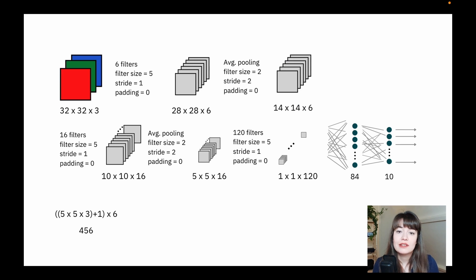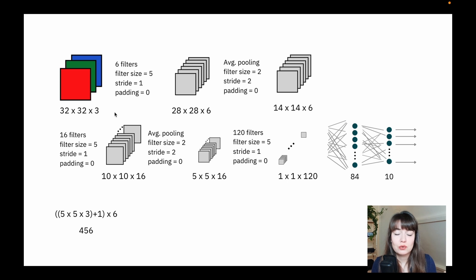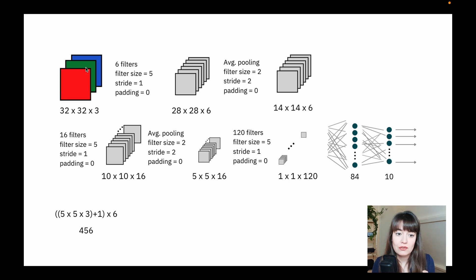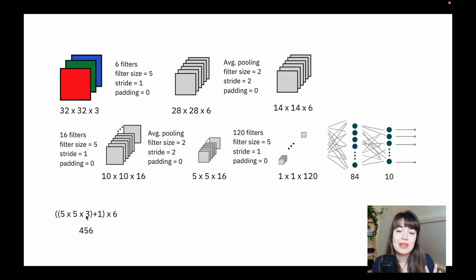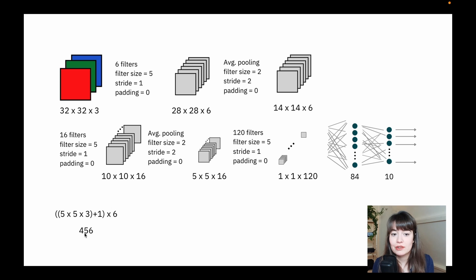One thing I want to show you is the difference in how many parameters we need for convolutional layers versus fully connected layers. To calculate the number of weights and biases for the convolutional layers: we have filter sizes of five by five, and because there are three channels — red, green, and blue — one filter also needs three layers. So we have five times five times three weights per filter, plus one bias per filter, times six filters. At the end, that means we have 456 parameters for this first convolutional layer. For the average pooling layer, we do not need any parameters since it only takes the max or average — nothing needs to be trained there.